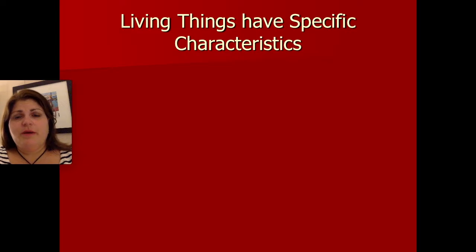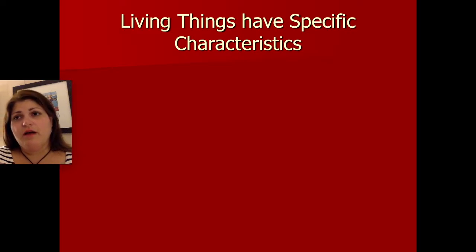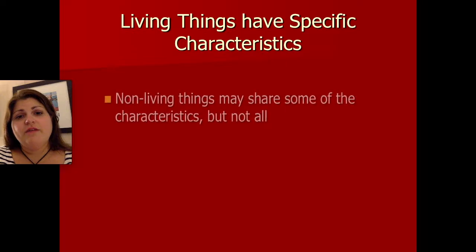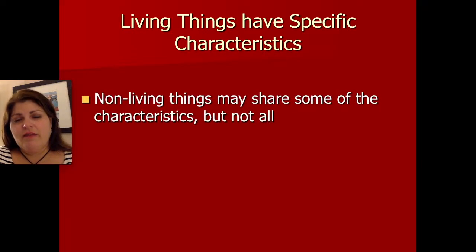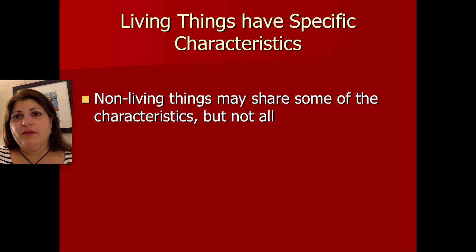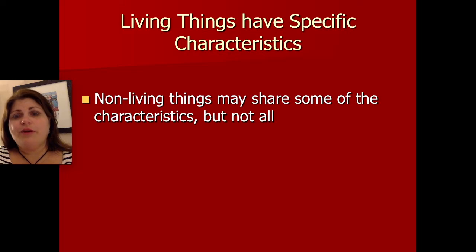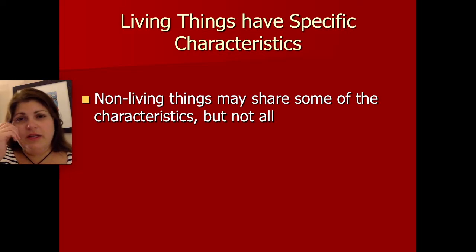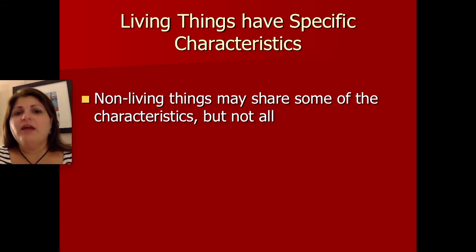So most of this video is going to be about the characteristics of living things, but there are a couple components we need to understand. The first is that not all of the characteristics of life are unique to life. For example, one of the characteristics of life is the need to maintain stable internal conditions. A computer has to do that too — if it gets too much or too little energy, or gets too hot, it will turn off and stop functioning. So those things aren't unique to life.